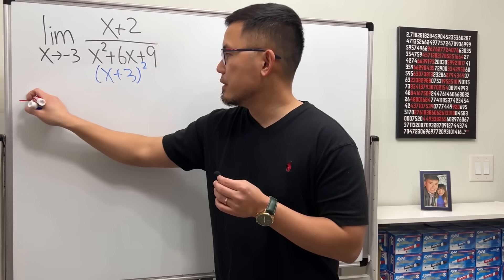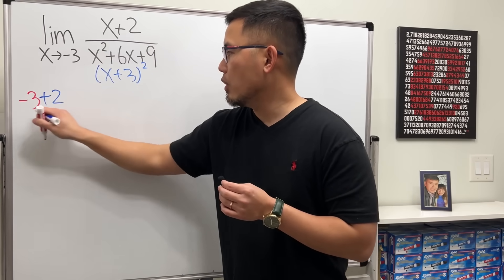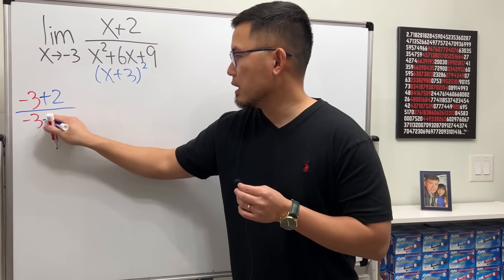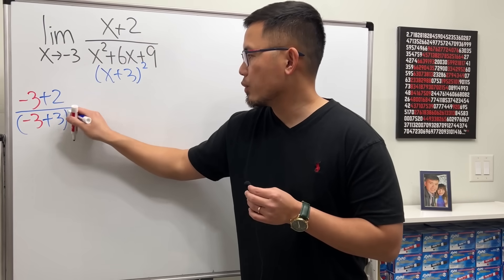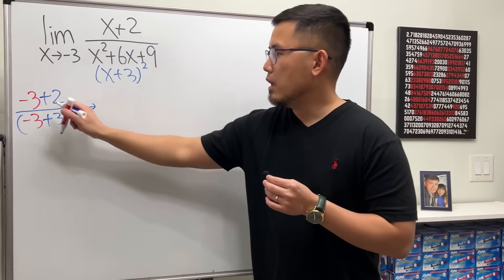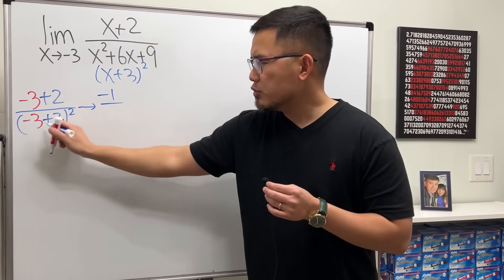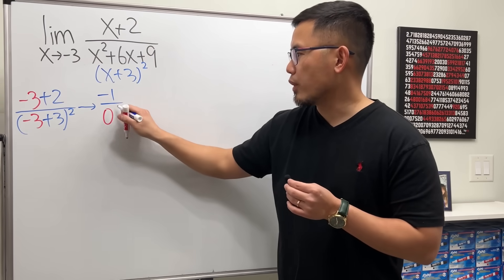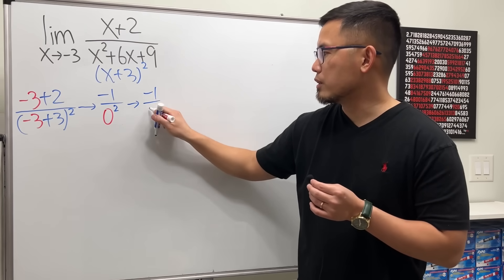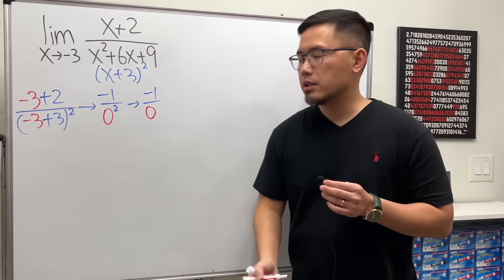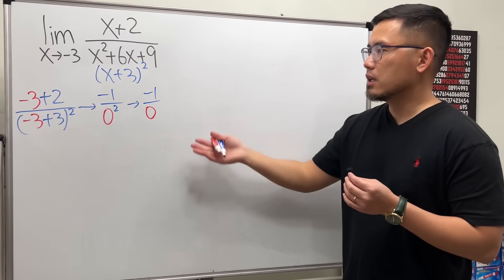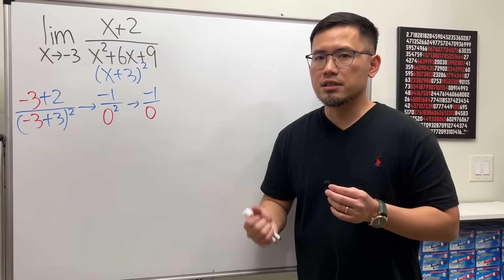So we will have negative 3 plus 2 over — let's put negative 3 in for x — so we have negative 3 plus 3, and then squared. I draw an arrow because we are taking the limit. Negative 3 plus 2 is negative 1. Negative 3 plus 3 is 0, and 0 squared is still 0. So we get negative 1 over 0. Now your concern is, we are dividing by 0 already — shouldn't we conclude the answer is D and E, namely does not exist?